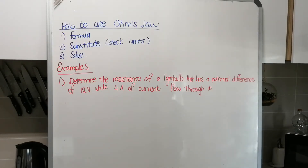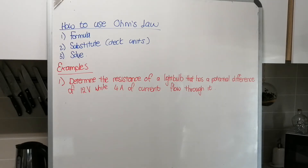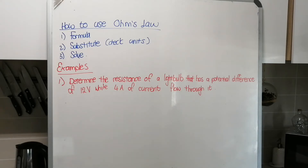When we use Ohm's Law, just like everything in physics, you write down the formula first because it's worth a mark, then you substitute in your values making sure they have the correct units. Remember for resistance it's Ohms, for potential difference it's volts, for current it's amps. Then you solve your equation.